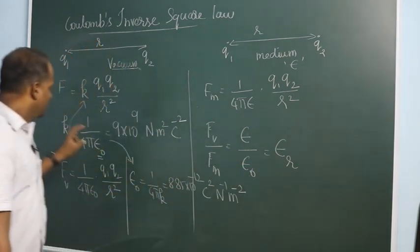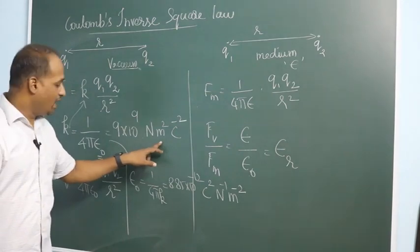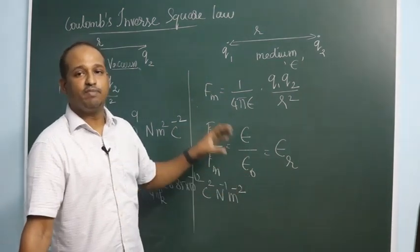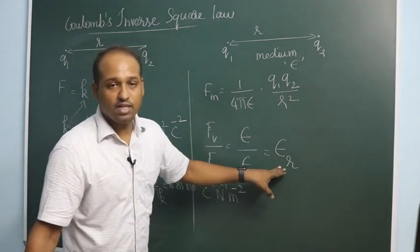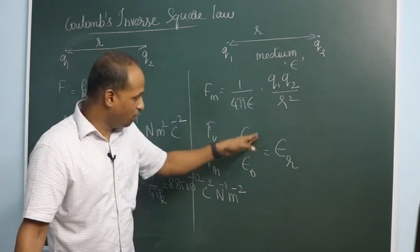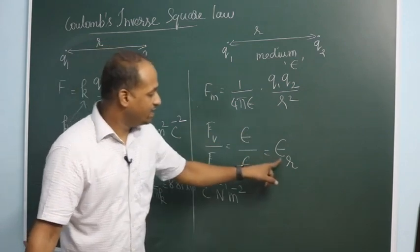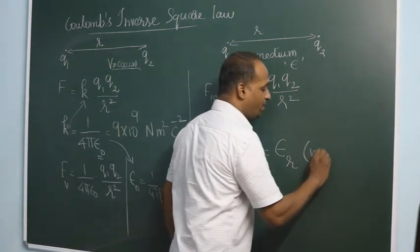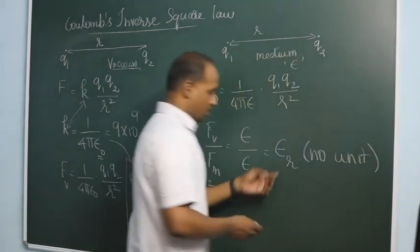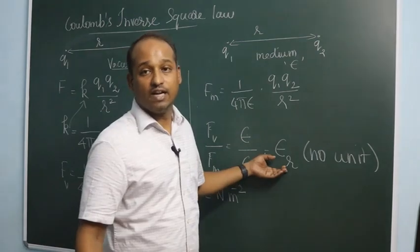Now one thing, this K is a dimensional constant, and epsilon naught and epsilon are dimensional constants because they have units. But epsilon R, which is the ratio of these two dimensional constants, both the units will be cancelled. Hence epsilon R, or the relative permittivity, does not have unit.